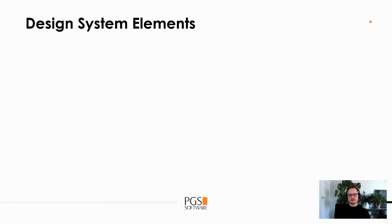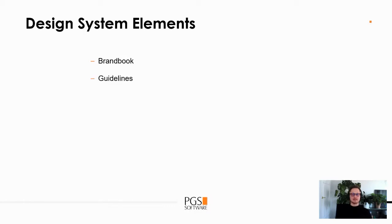Let's look at what kinds of elements we can have in a design system. There are elements such as a brand book — basically a brand user manual that tells you how to use your symbols, colors, tone and voice, and lots of other things. There are also guidelines that tell you how to use elements and components to keep everything consistent — guidelines for designers, for developers, and even for marketers.